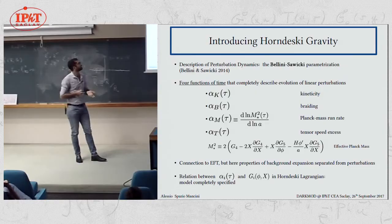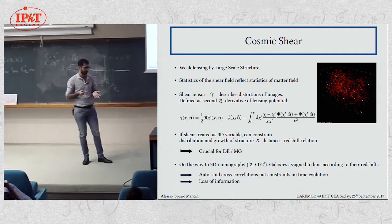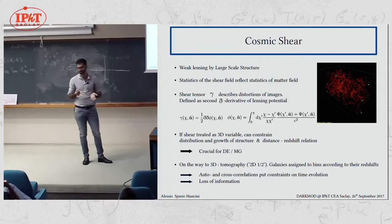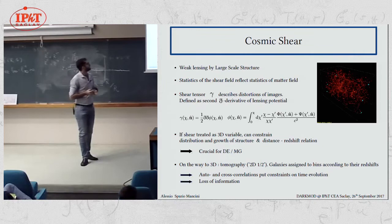What we aim at doing is putting constraints on the alpha functions by using weak lensing. So now I move to the lensing part very briefly again. Just to clarify that I'm speaking about cosmic shear effectively, so the weak lensing by the large-scale structure, where the effect is so small, then we have to measure it in a statistical way. And the statistics of the shear field reflect the statistics of the matter field.